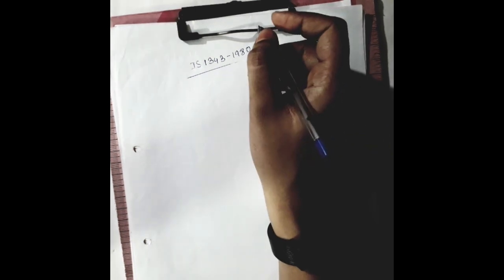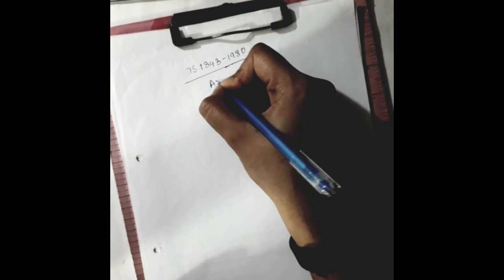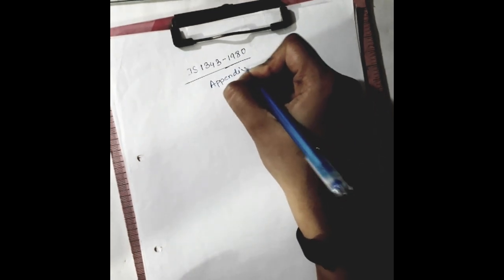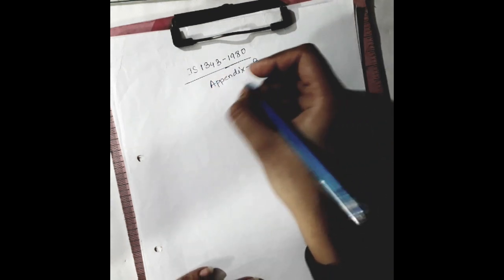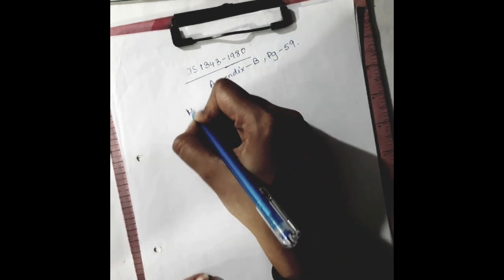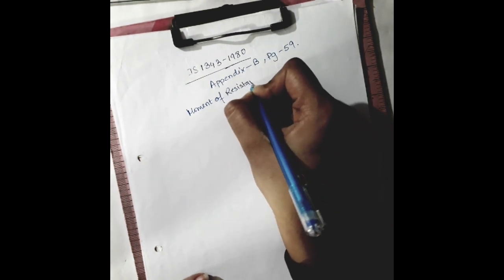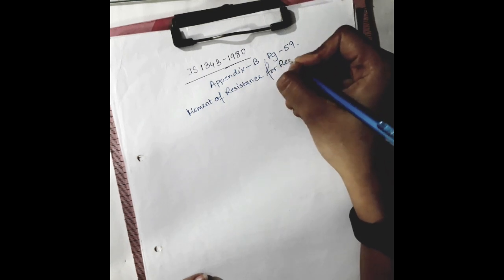As per the Indian code provision, which is IS 1343 1980, you can check this in Appendix B, page 59, for the moment of resistance for rectangular and T-section.